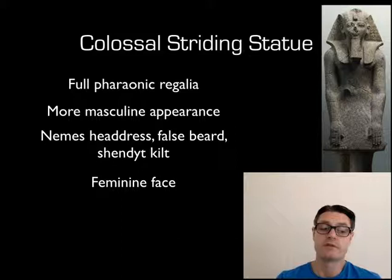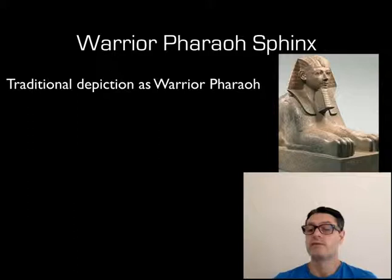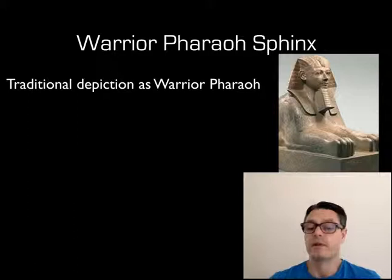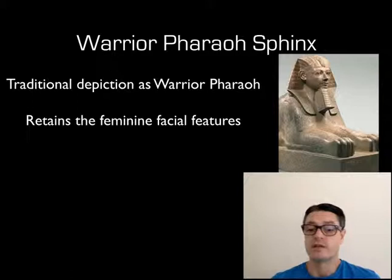Another image from Deir el-Bahri is the warrior pharaoh sphinx. This was one way that ancient Egyptian kings could portray themselves — another way being in a chariot scene with bow and arrow and the blue war crown. The warrior pharaoh sphinx is how Hatshepsut portrayed herself as a warrior pharaoh. It's a very traditional scene — she's wearing the Nemes headdress and the false beard, which is expected for this scene, but she still retains those feminine facial features.